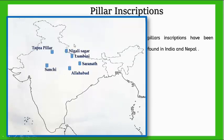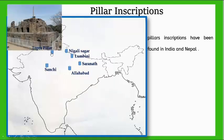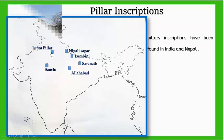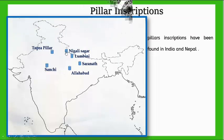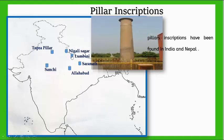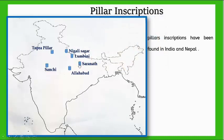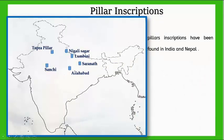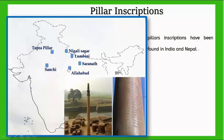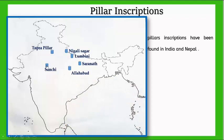Asoka's Pillar Inscriptions have been found in India and Nepal. Important locations include: Topra Pillar, Nigliva Sagar, Lumbini, Sarnath, Allahabad, and Sanchi.